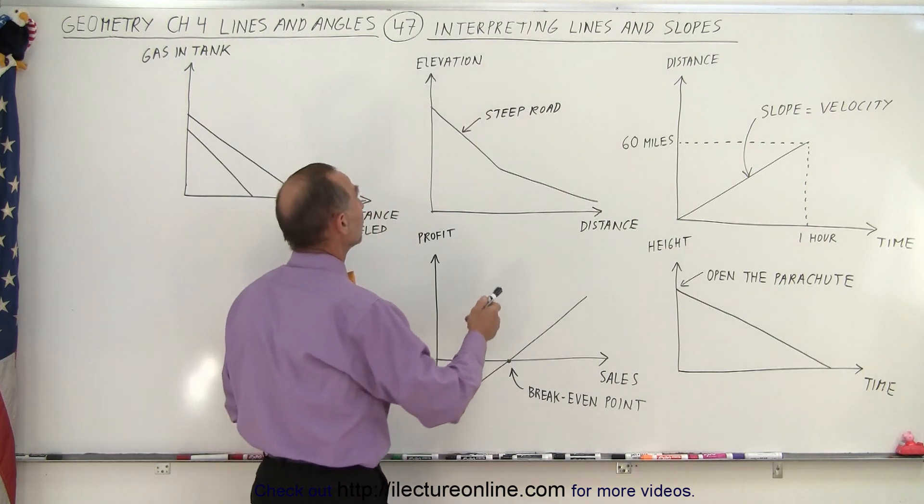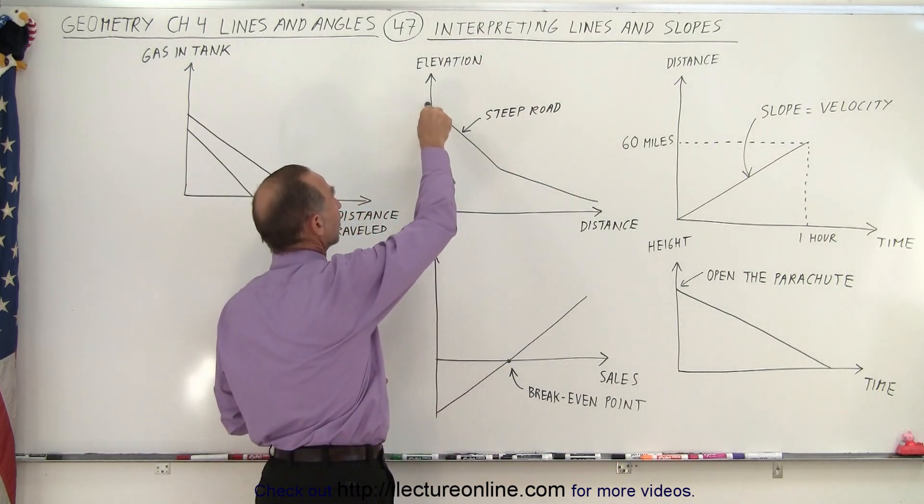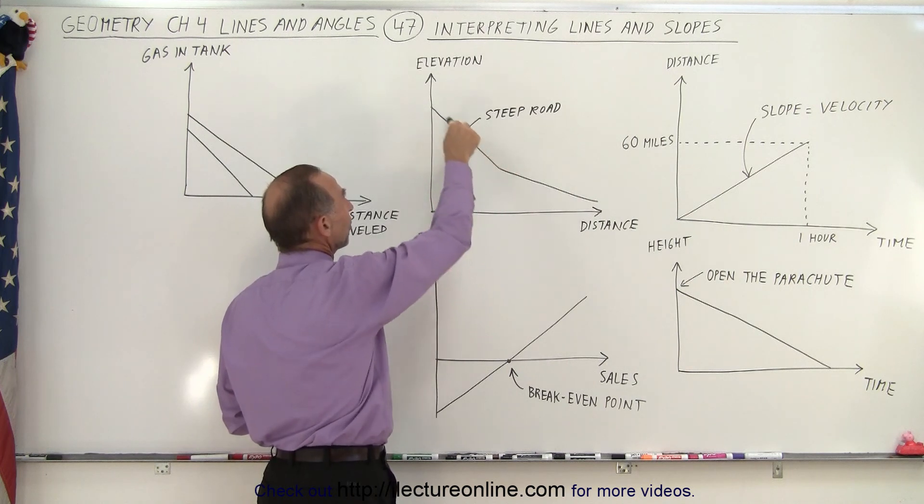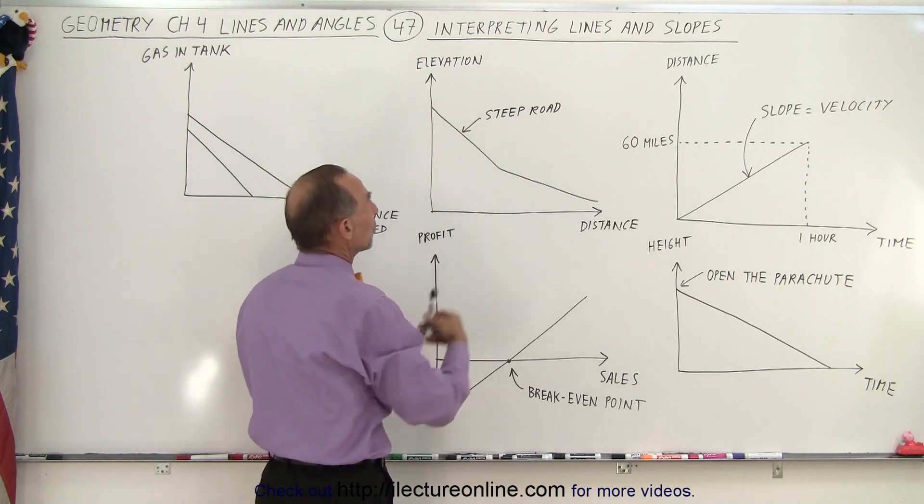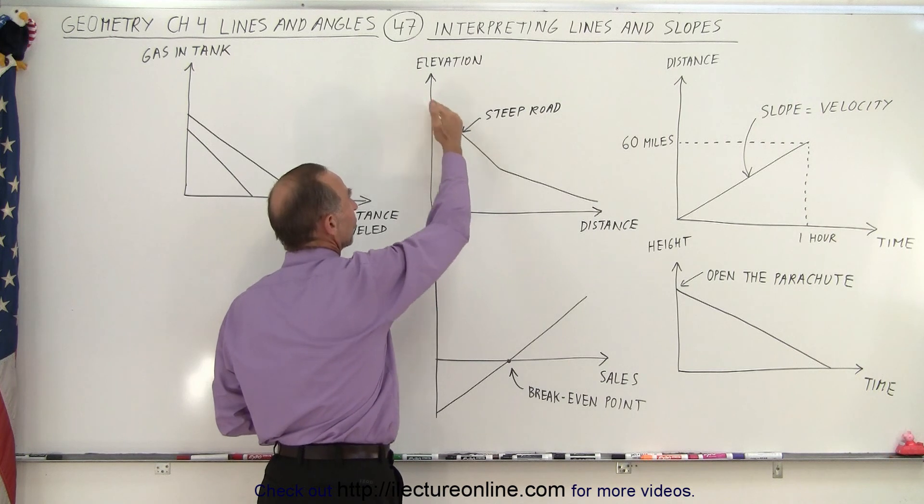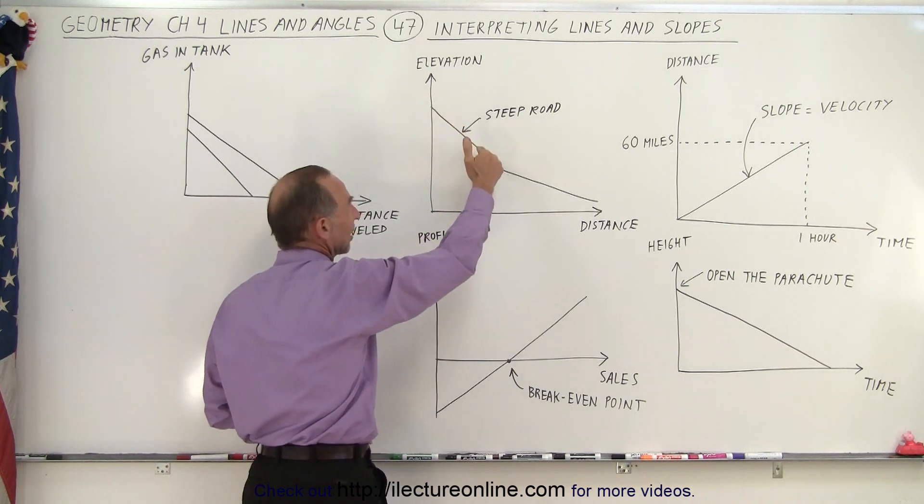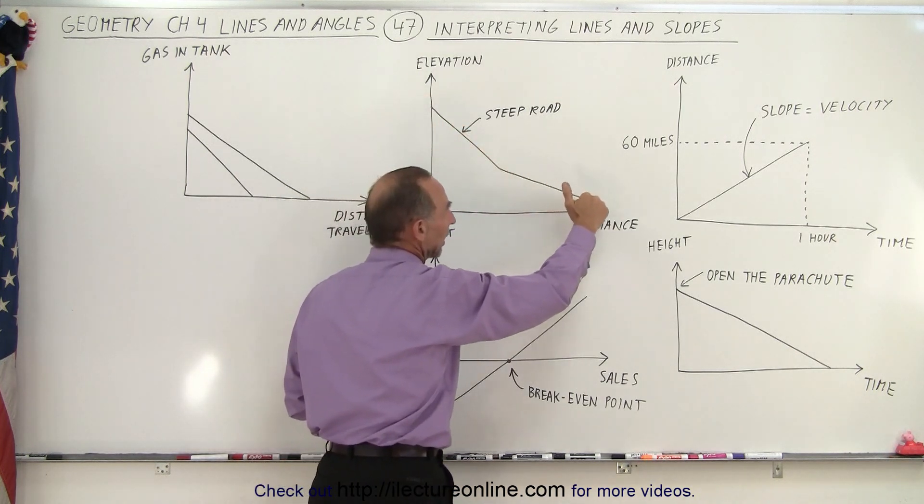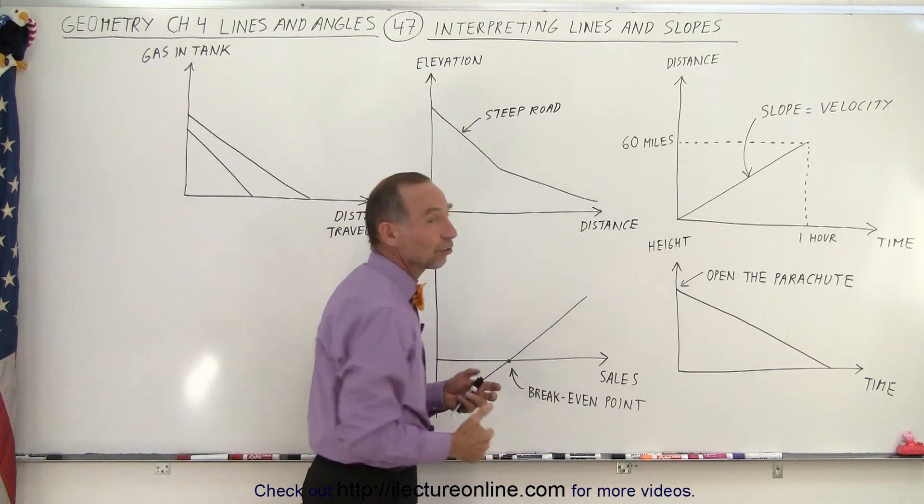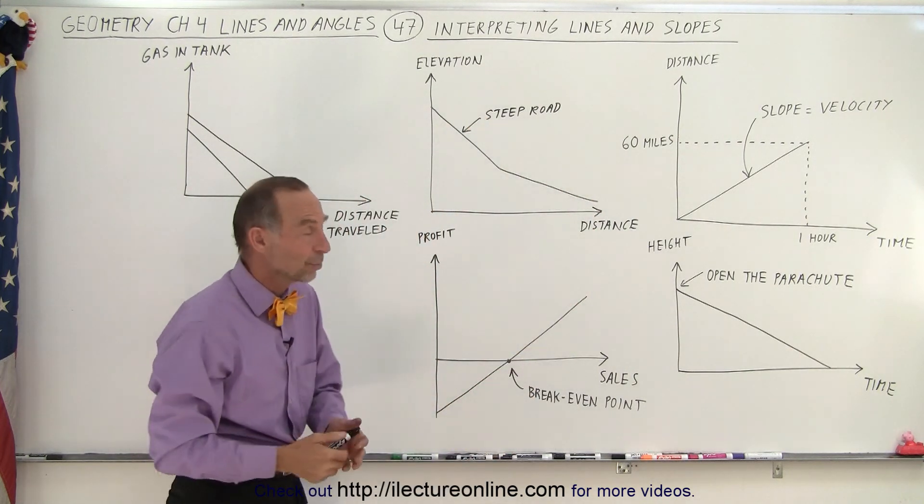Let's say you're driving on a road and you went over a mountain pass on the other side. Here the slope represents how steep the road is. A very big negative slope means that you're dropping very fast and then you get to the point where the road is no longer as steep. So here you can see that the slope simply represents how steep the road is.